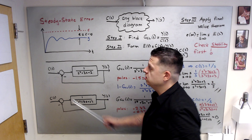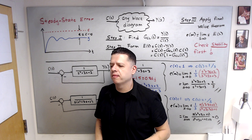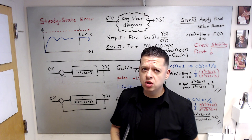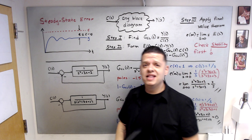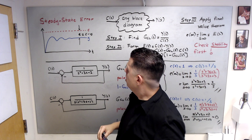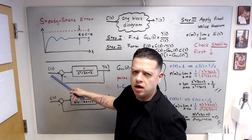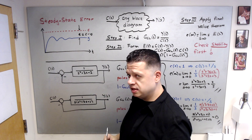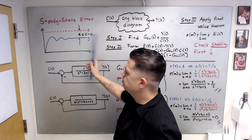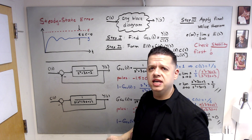We are going to cover steady-state error. Forget about the textbooks — most of them overly complicate steady-state error and make you memorize a lot of things. What you need to know is three steps: step one, step two, and step three. That's it. You can apply steady-state error analysis to any block diagram. Steady-state error is, as t goes to infinity, the difference between the command C and the output Y.